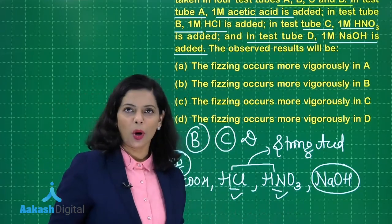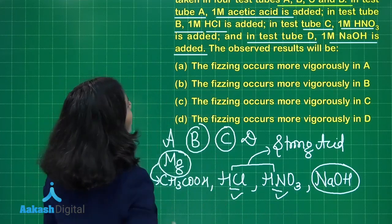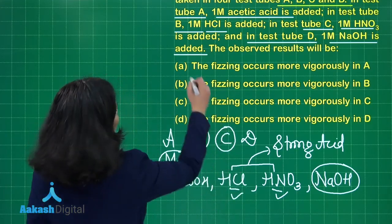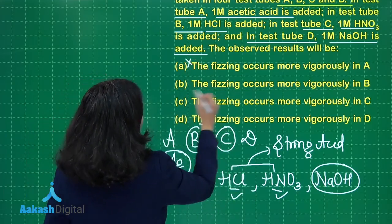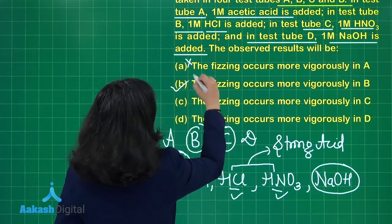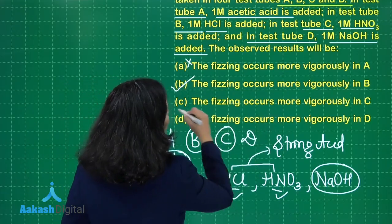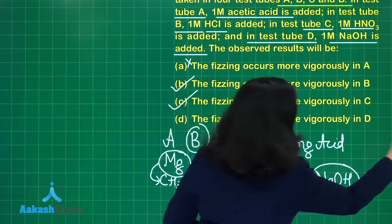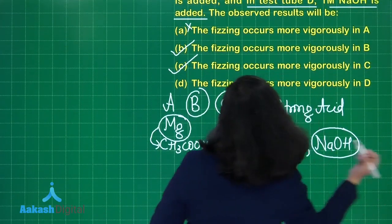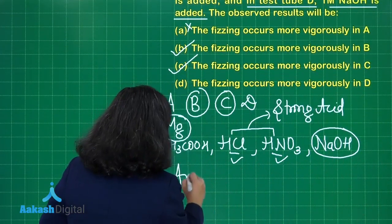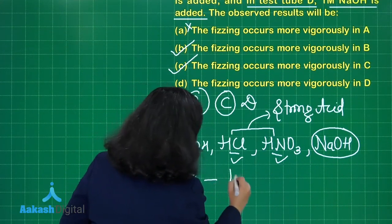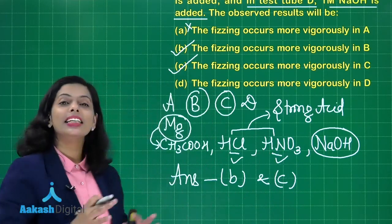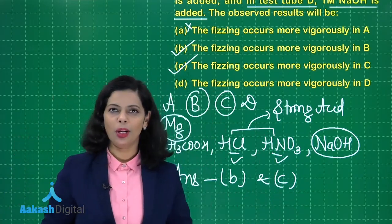Now the turn is there to look at the options. So if you look at the first option, the fizzing occurs more vigorously in A, absolutely incorrect it is. But the fizzing occurs more vigorously in B and the fizzing occurs more vigorously in C is correct. So on the basis of this, which answer you have chosen? Answer is option B and C. And I hope this question is clear to you all.